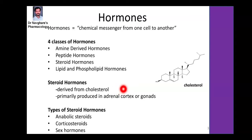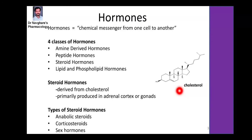Steroidal hormones are primarily produced in the adrenal cortex or gonads. Most steroidal hormones are of cholesterol origin. Some hormones are anabolic in nature, some are corticosteroids, and some are sex hormones. All of them contain a steroidal ring.